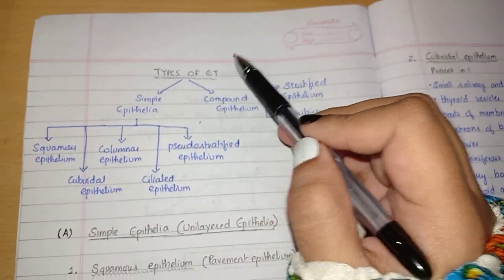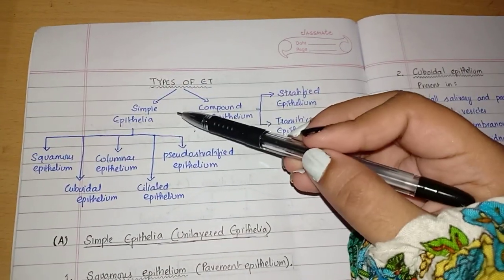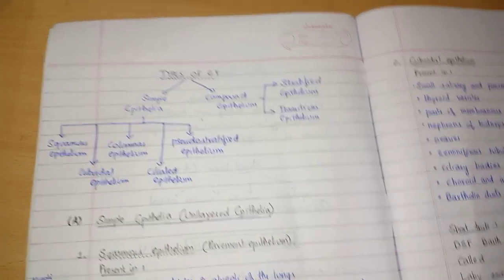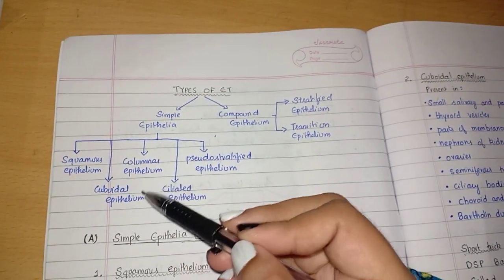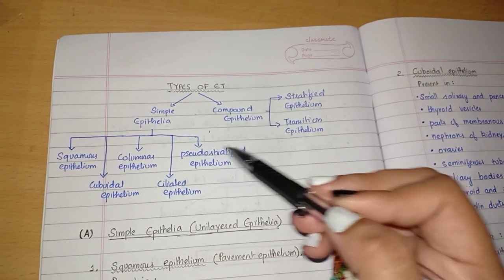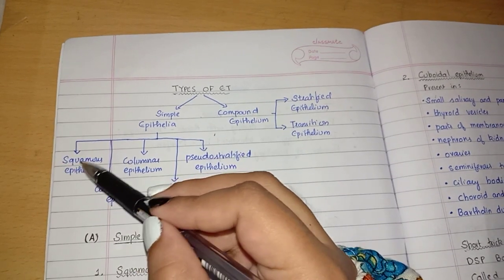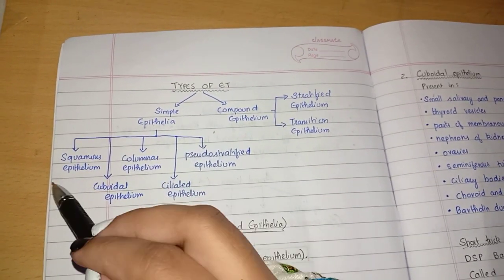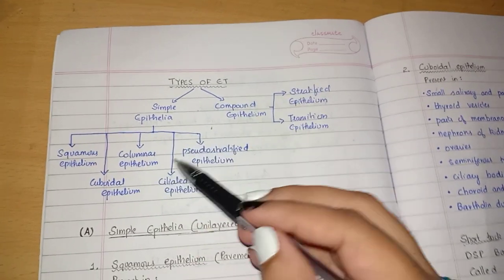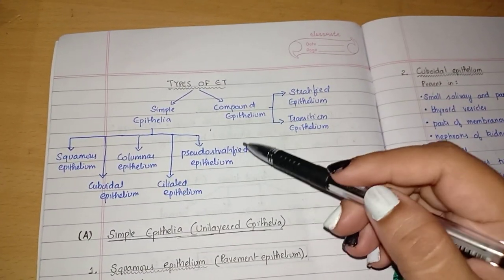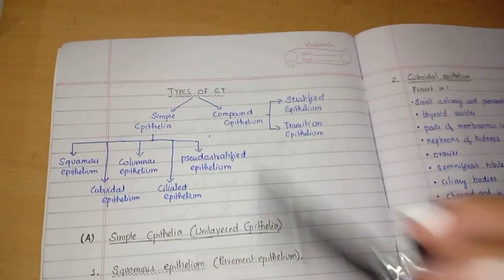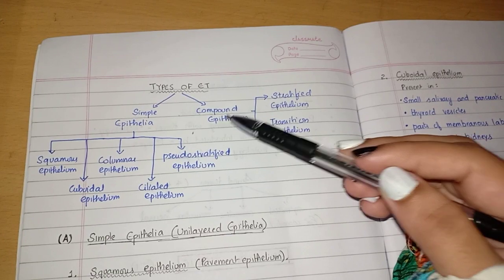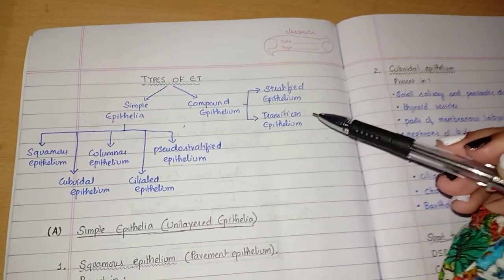ET means epithelial tissues. Epithelial tissues are classified into two: simple epithelia and compound epithelia. Simple epithelia is classified into five types: squamous, cuboidal, columnar, ciliated, and pseudostratified. Compound epithelium is of two types: stratified epithelium and transitional epithelium.